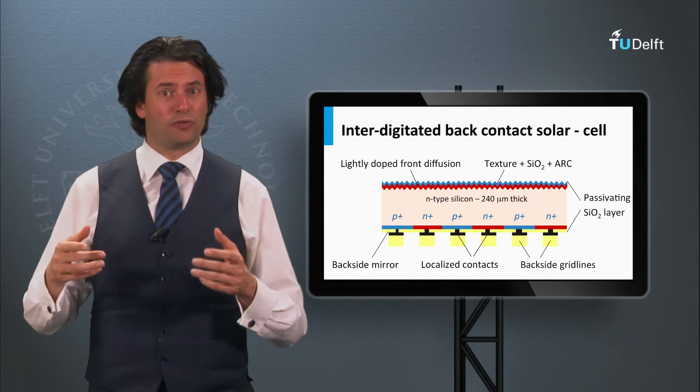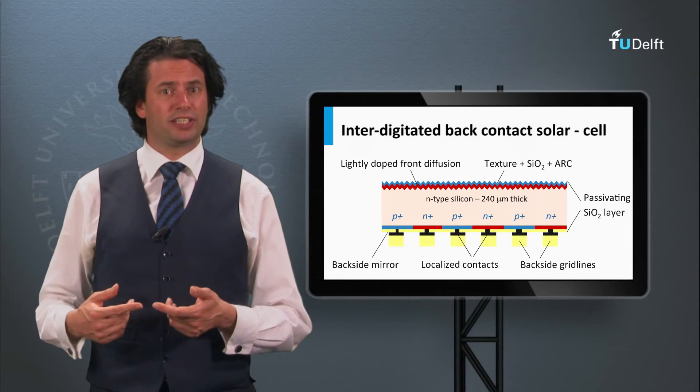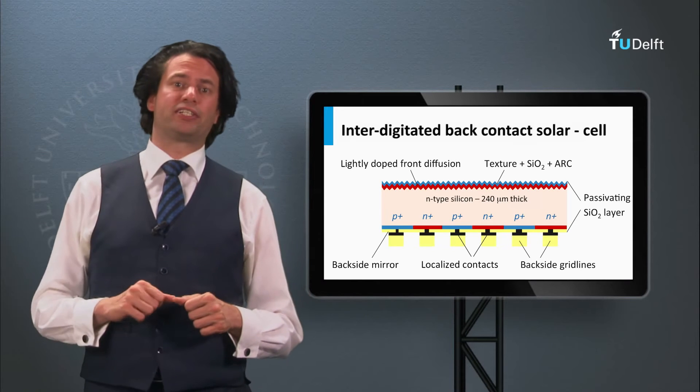All contacts responsible for collecting charge carriers at the N and P side are positioned at the back of the crystalline wafer solar cell.